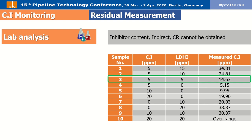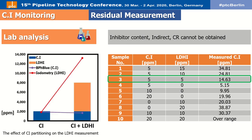Consequently, test methods such as bromophenol blue titration and iodometry have been implemented to assess reliability when measuring residual corrosion inhibitor in the presence of LDHI. Based on the results, the highest reliability is achieved using bromophenol blue titration, with only 5–10% present error.